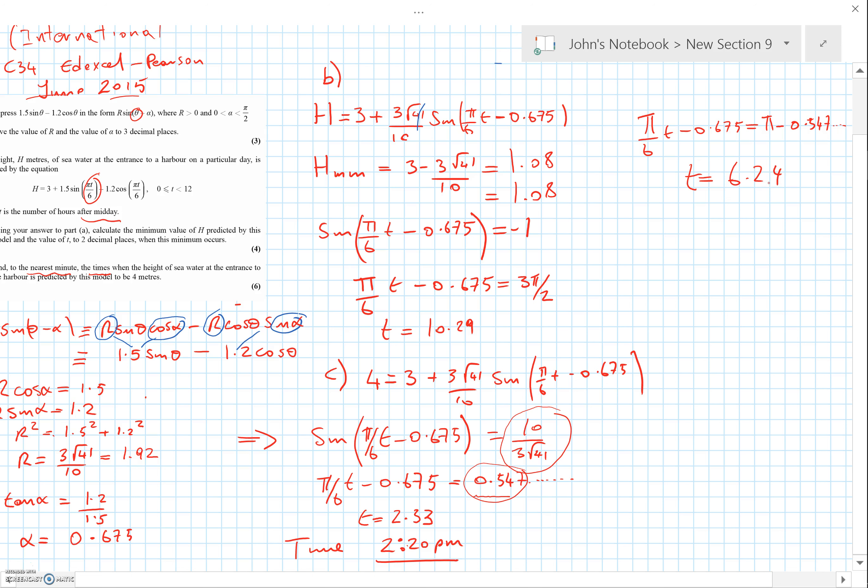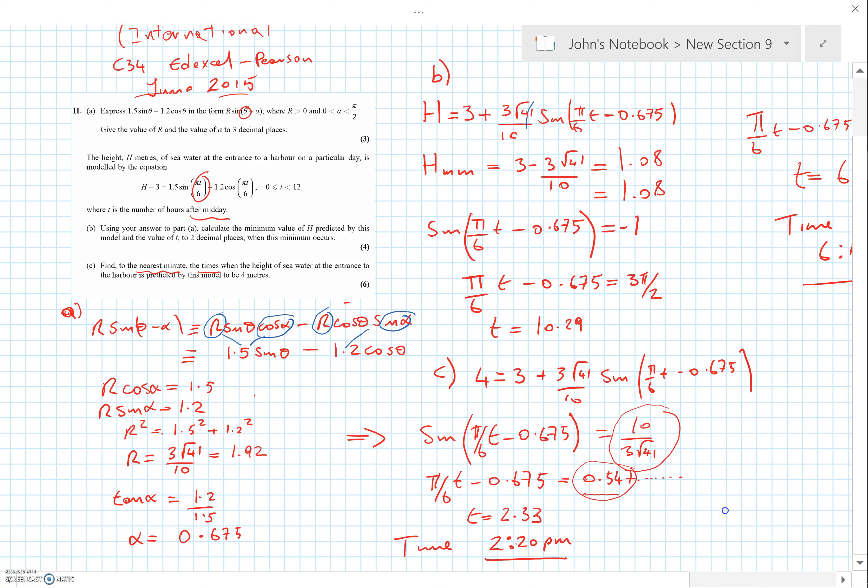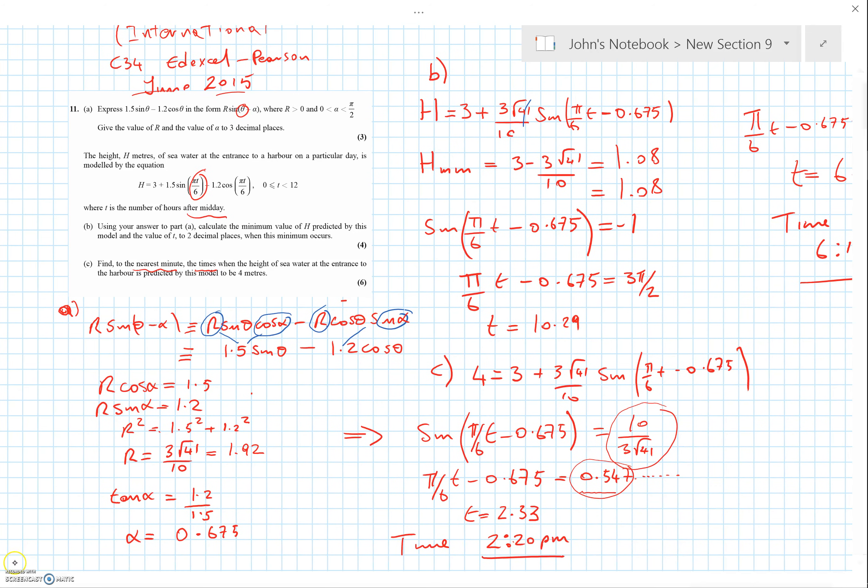Of course, we've got to convert that to a time in minutes. Let's give it a time of day. The time for that is 6:15 PM. That's the other time. That's the one most people missed. You can use a CAST diagram or whatever you want, but you just need to appreciate that there's more than one solution here. All right, that's it.